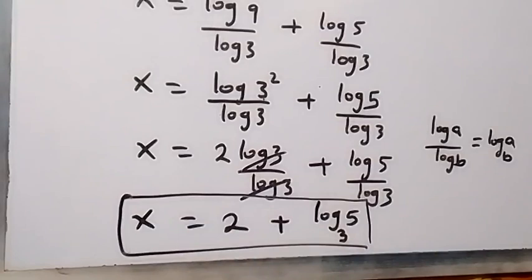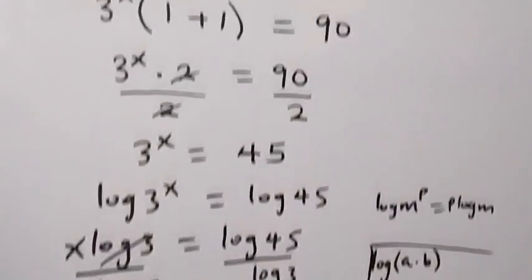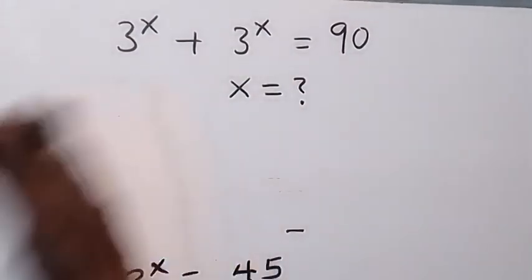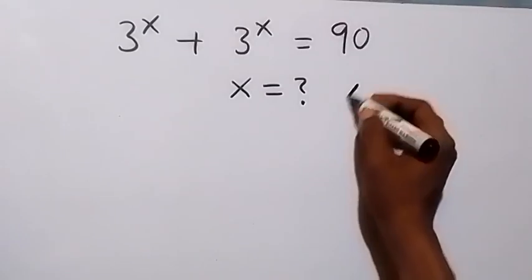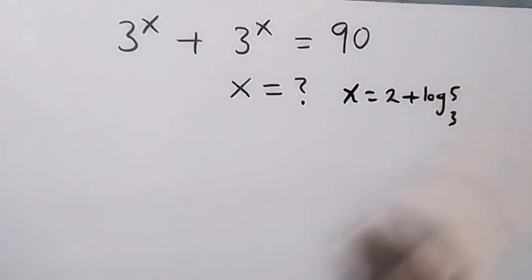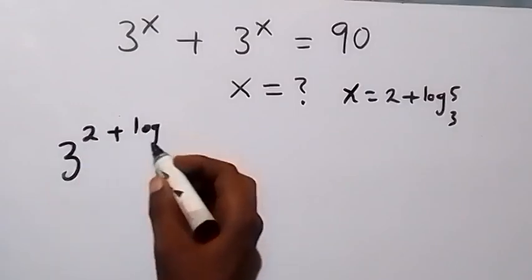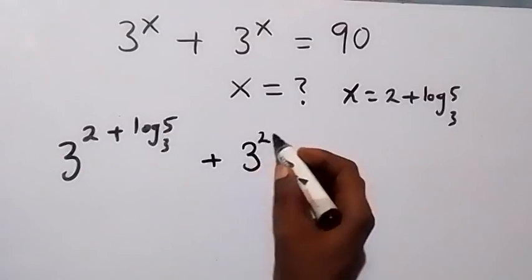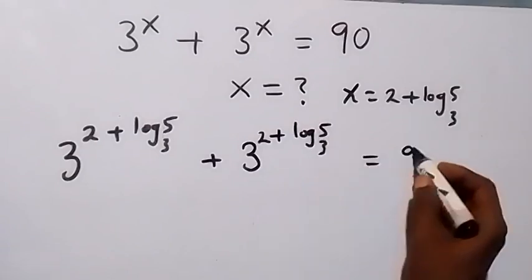Let's check if this satisfies the original equation: 3 raised to x plus 3 raised to x equals 90. Substituting x equals 2 plus log base 3 of 5, we have 3 raised to (2 plus log base 3 of 5) plus 3 raised to (2 plus log base 3 of 5) — is this equal to 90?